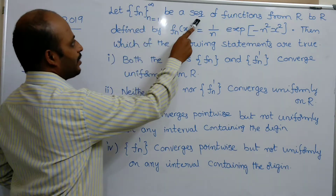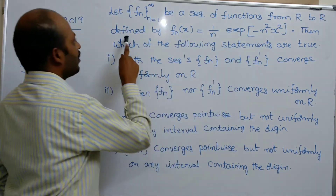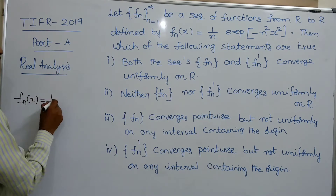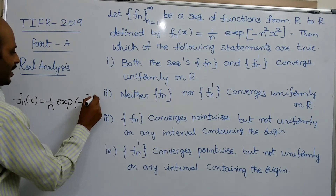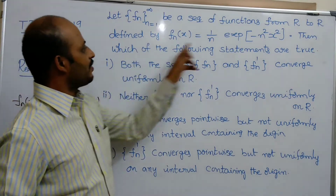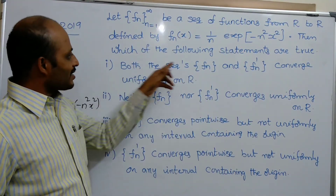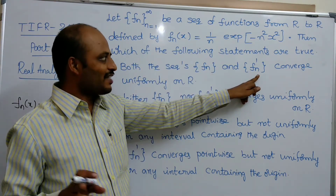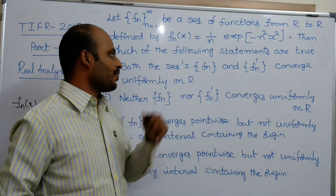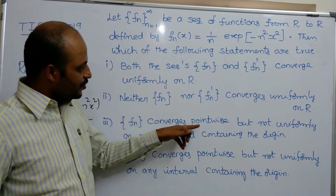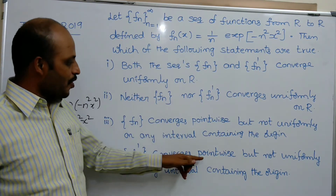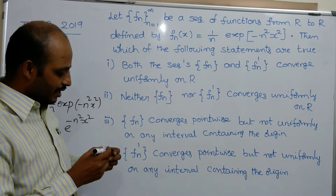Let fn, n equals 1 to infinity, be a sequence of functions from R to R defined by fn(x) = (1/n)·e^(−n²x²). Then which of the following statements are true? Both fn and fn' (first derivative of fn) converge uniformly on R; neither fn nor fn' converge uniformly on R; fn converges pointwise but not uniformly on any interval containing the origin; fn' converges pointwise but not uniformly on any interval containing the origin.